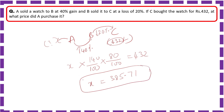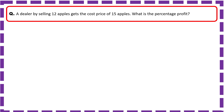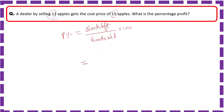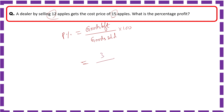A dealer by selling 12 apples gets the cost price of 15 apples. What is the percentage profit? Using the formula: Profit% = (Goods left / Goods sold) × 100. Goods sold = 12, goods left = 15 − 12 = 3. Profit% = (3 / 12) × 100 = 25%.